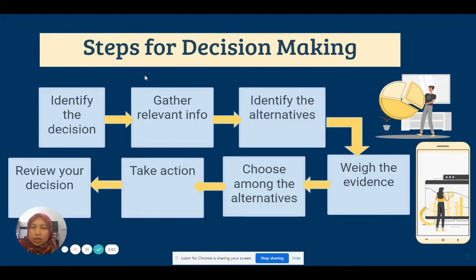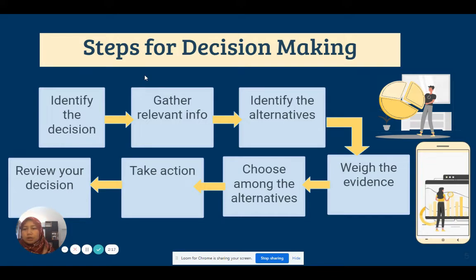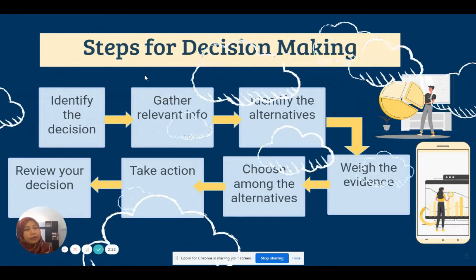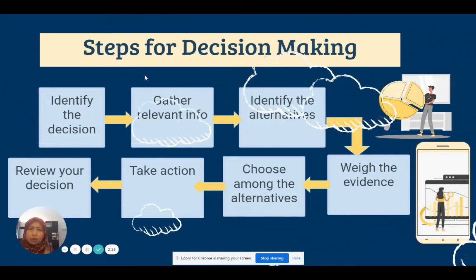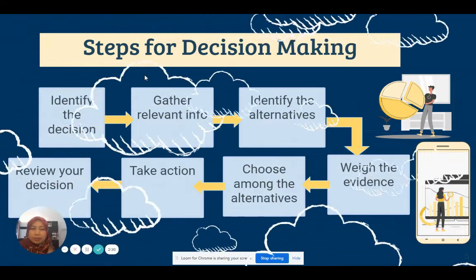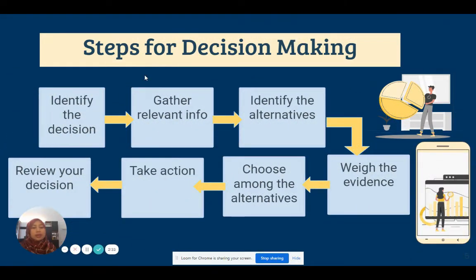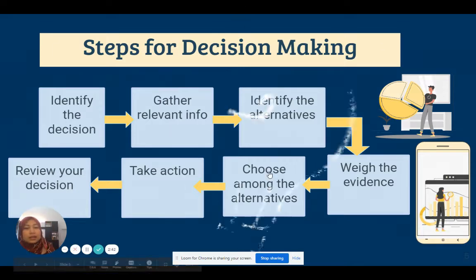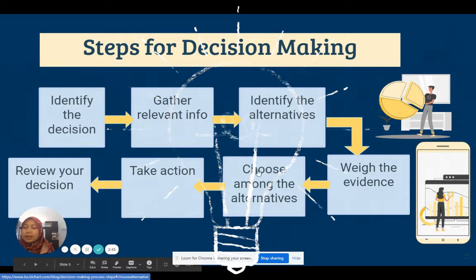What are the steps in decision making? First, you identify the decision — for example, whether to proceed with a movement control order regarding COVID. Then you gather information, identify the alternatives (such as a full national lockdown versus selective lockdowns), look at the evidence from the data, identify the best options — this is where data analytics plays its role — take action, and review your action over time.